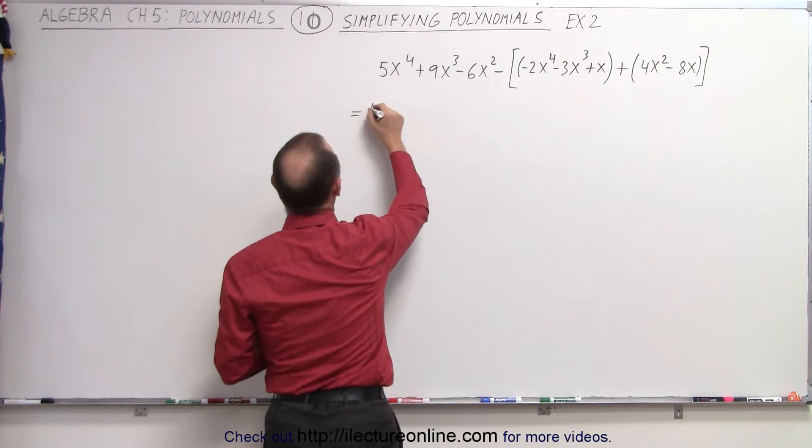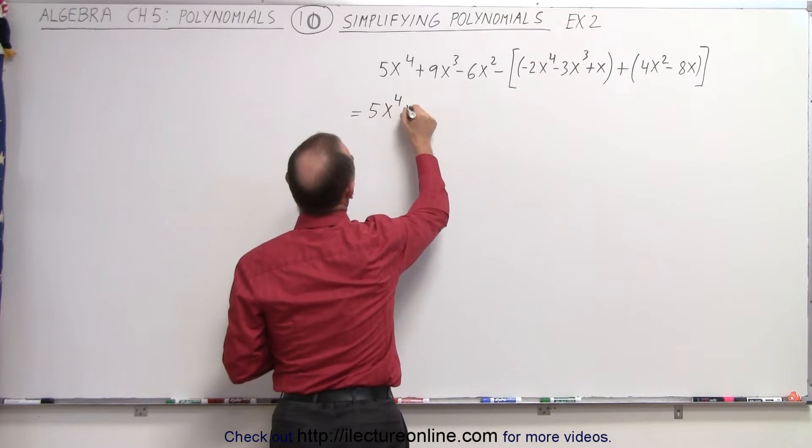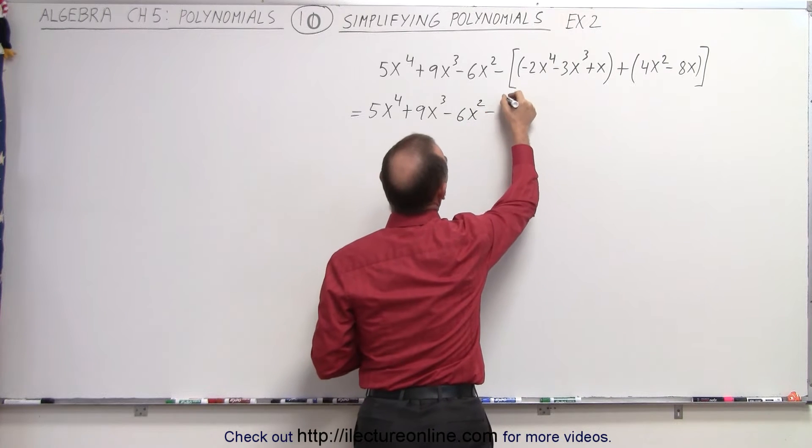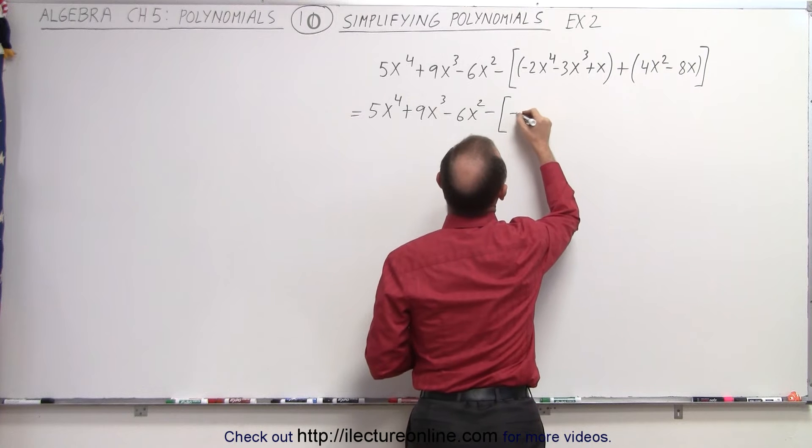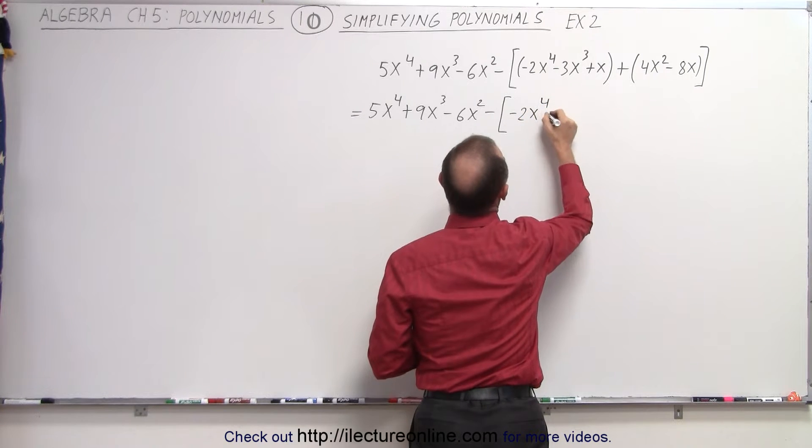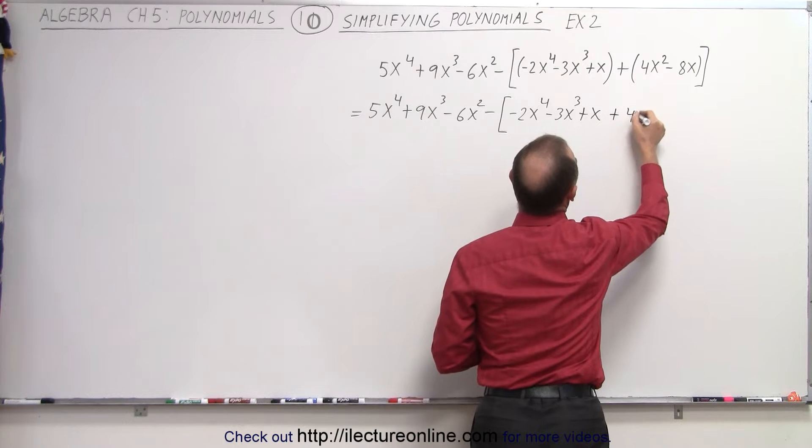So this becomes 5x to the 4th. We keep the negative sign there. We're not going to use it yet. And so here we simply remove the parentheses, minus 2x to the 4th, and the same over here, plus 4.